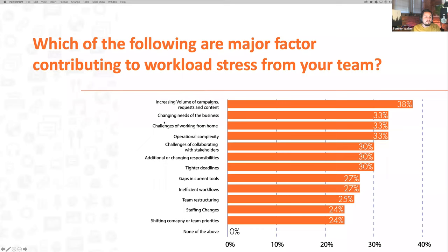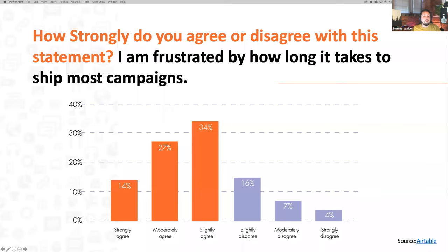If you look at what these major stressors are, you start to see things like operational complexity, challenges of collaborating with stakeholders, gaps in current tools, and inefficient workflows — challenges happening across companies of all sizes. What happens when these challenges come into play is it creates a high level of organizational drag that makes it very difficult to get something out the door.